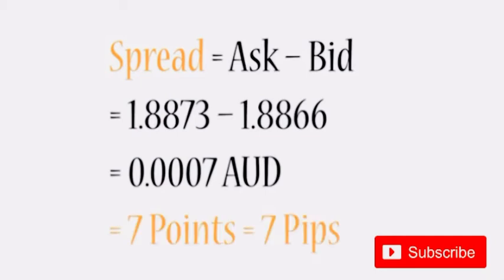Let's express this now in points and pips. This is equal to seven points because it's seven times the minimum change this currency pair can experience, and it's also equal to seven pips because this is equal to seven times 0.0001.